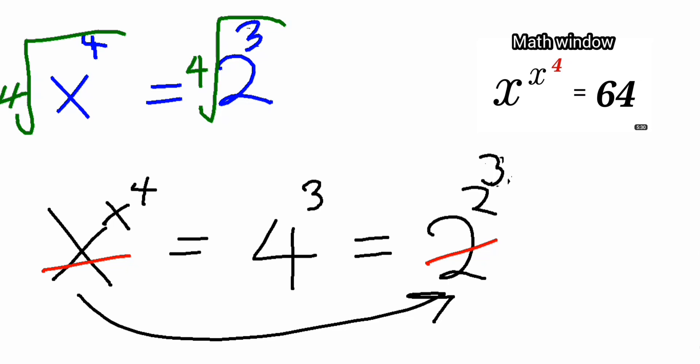This we cancel, this we cancel, this we cancel, and then our x will now finally be, our x will now finally be plus or minus, because square root comes with plus or minus, plus or minus the fourth root of 2 to the power of 3.